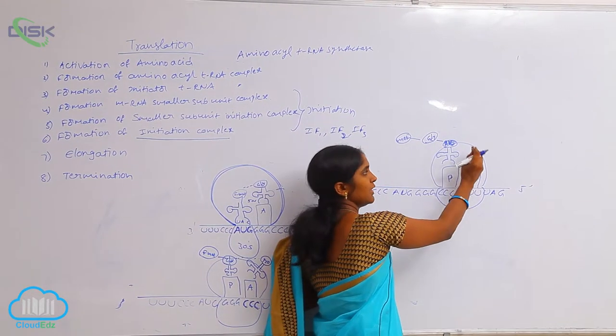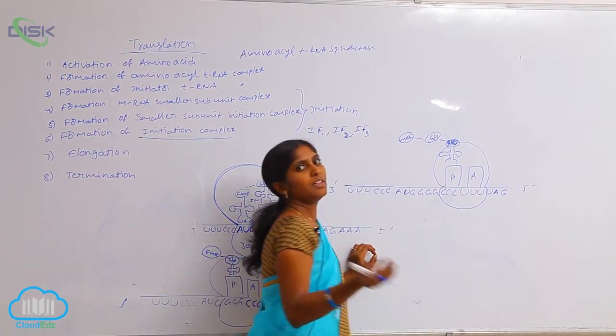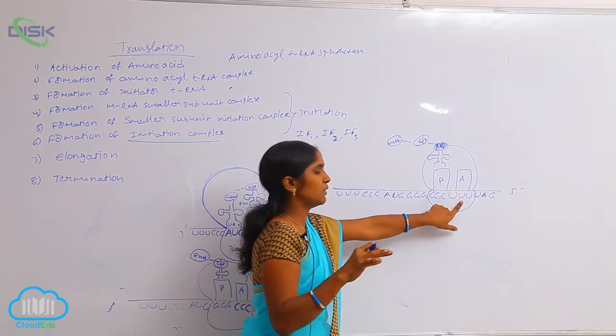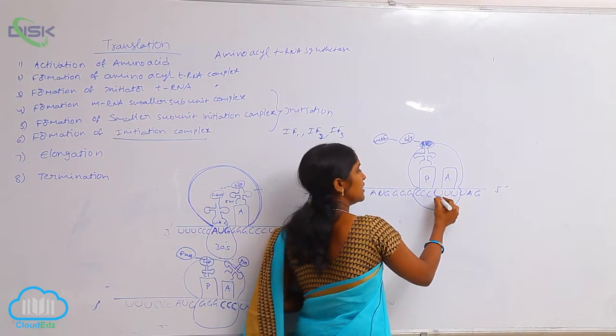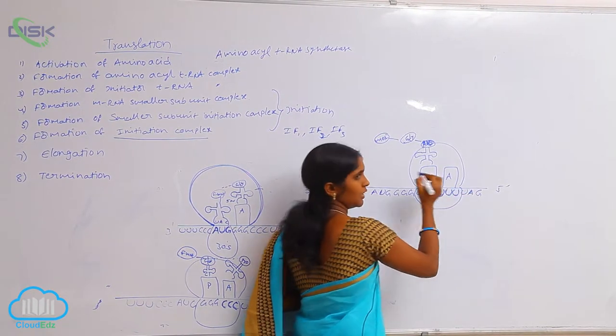Then, this place is empty. This place is occupied by the next tRNA according to the mRNA genetic information. According to the mRNA genetic information, UUU codon is here.